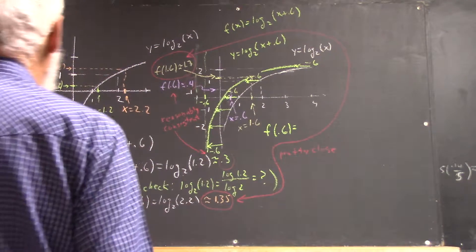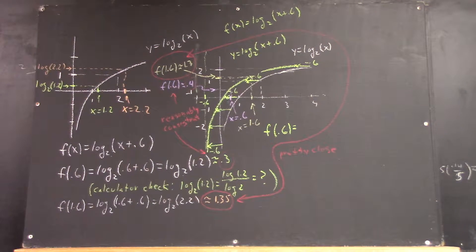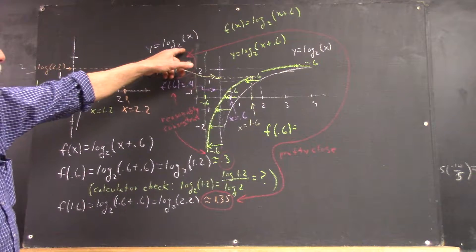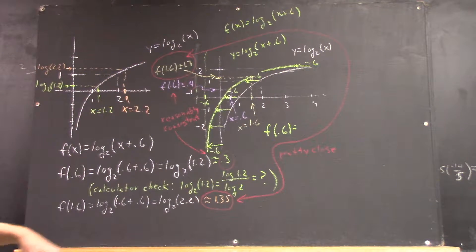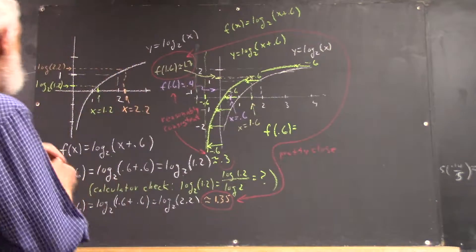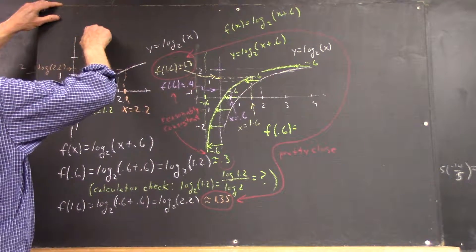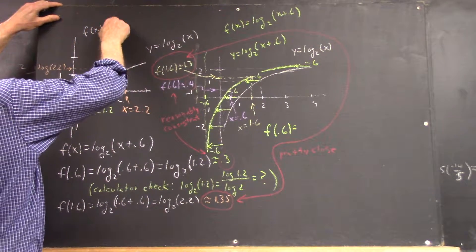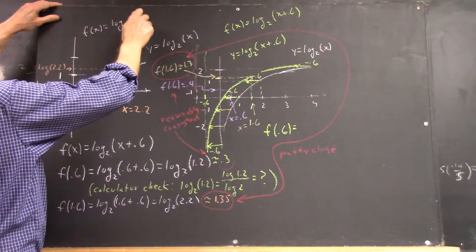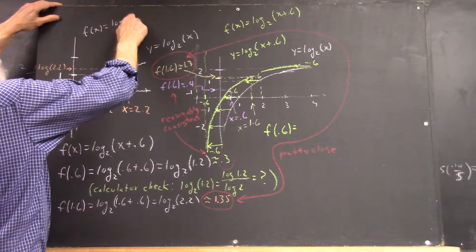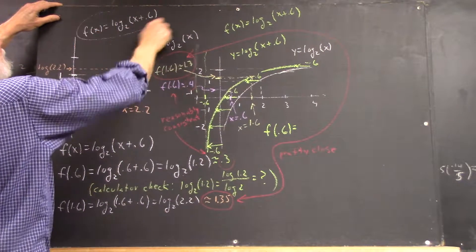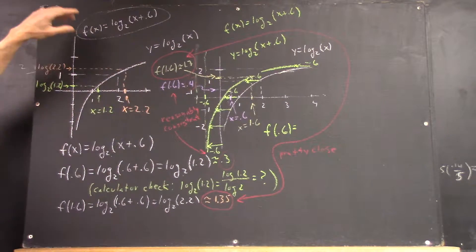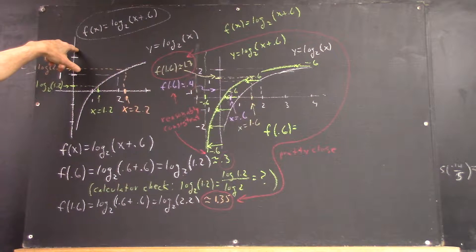Okay, so we have a problem where y equals log base 2 of x, and that's our f of x function. So, I didn't actually write this out, f of x equals log base 2 of x plus 0.6. This is a function we're going to want to evaluate.